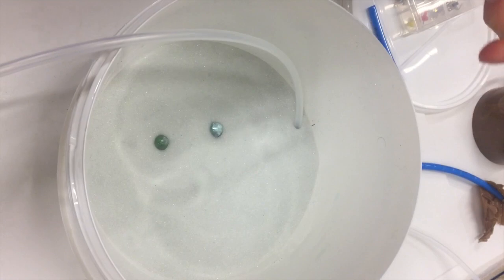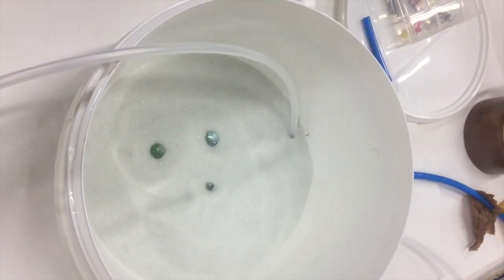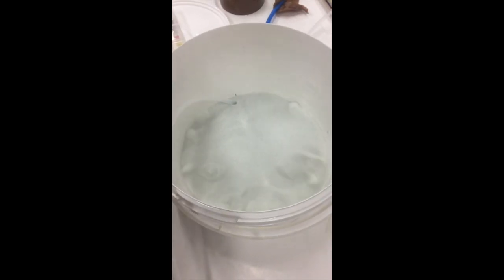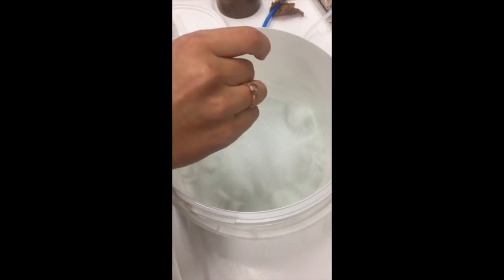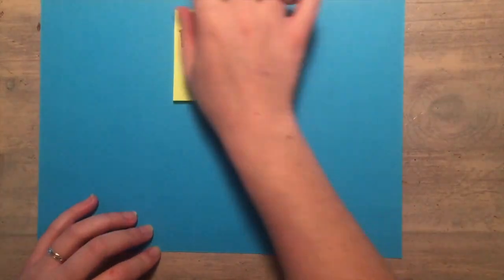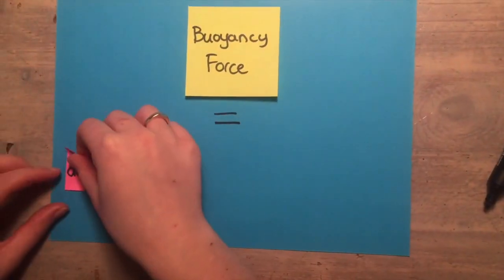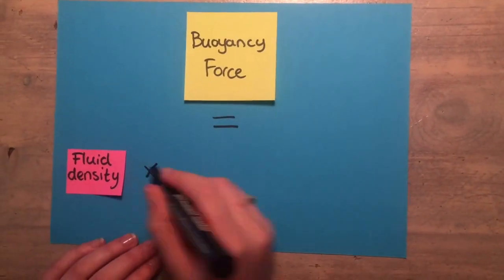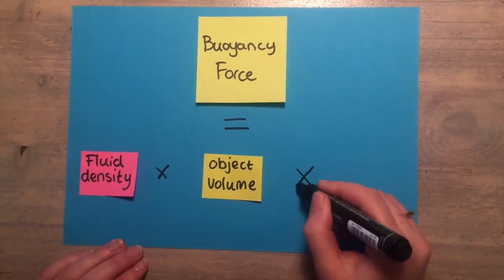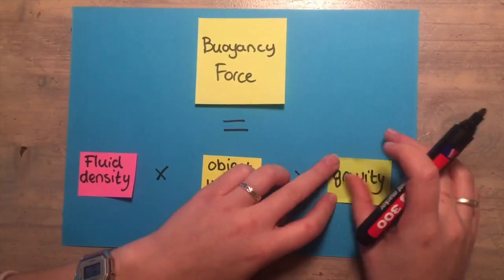You can also see a difference when placing objects on the surface. On the surface of the fluidized glass beads, some objects will sink and some objects will float. This has to do with the buoyancy force. The buoyancy force is a function of the density of the surrounding fluid times the volume of the object times the gravity.